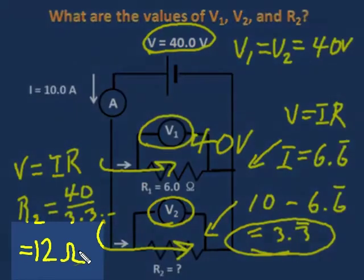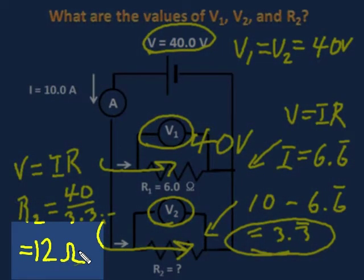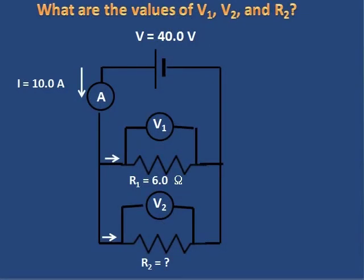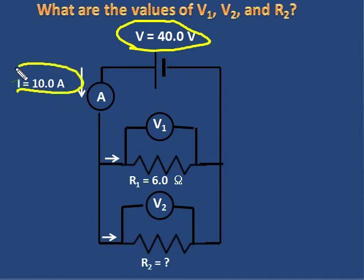Now let's try this another way. What I notice is that I'm given a total voltage, 40 volts, as you can see there. But I'm also given a total current. If I have a total voltage and a total current, I can apply Ohm's law in a big way for the entire circuit and find the total resistance.